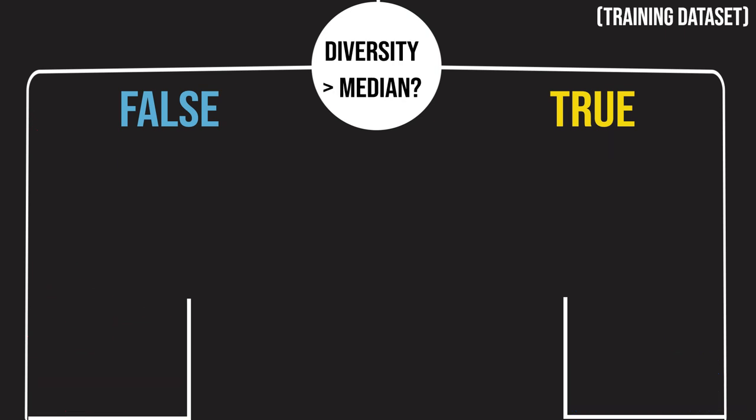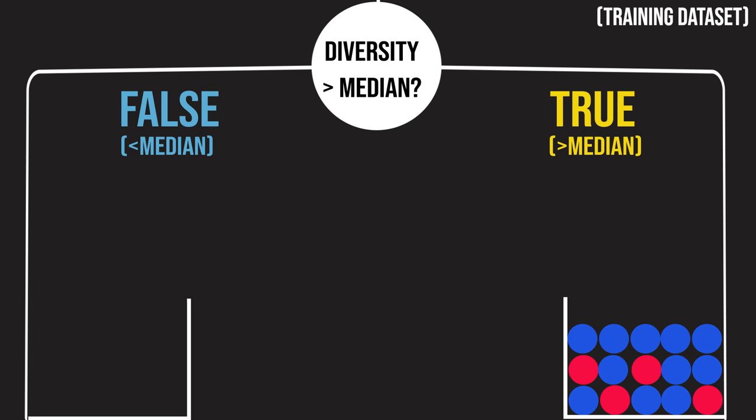When we split on racial diversity, we see that the true branch, which contains states with diversity above the median, has mostly blue states. The false branch, or states with diversity below the median, has an almost equal number of red and blue states. This means that knowing that a state is not diverse does not meaningfully indicate political leaning.